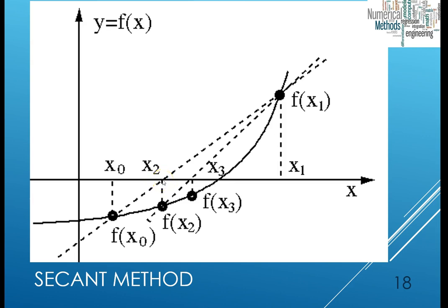That point where it crosses is called x sub two. You project x sub two on the curve, and then connect the new point f(x2) and f(x1) with another line. This line again crosses the x-axis giving you x sub three, then f(x3), and so on until you come close enough to the actual root. The main difference from the bisection method and the method of successive substitution is that the secant method is not a bracketing method, so there is no assurance that it will converge to a certain root.